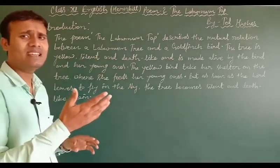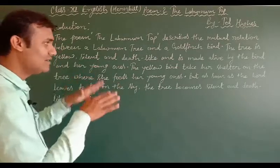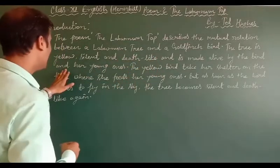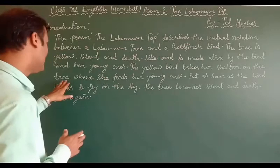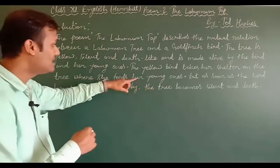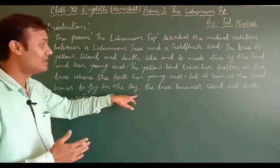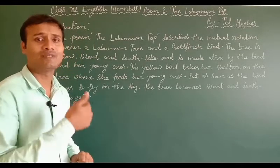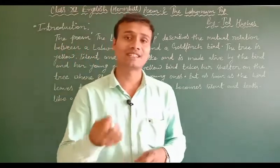The tree is yellow, silent, and death-like, as there is no movement in it during the autumn season — all the leaves have fallen down. The poet says the tree is made alive by the bird and her young ones, as the yellow bird takes shelter in the tree and feeds her young ones. But as soon as the bird leaves to fly in the sky, the tree becomes silent and death-like again.